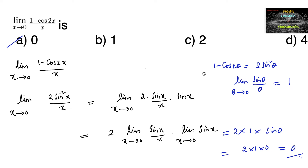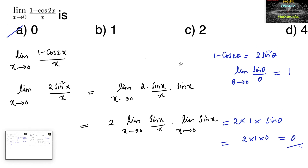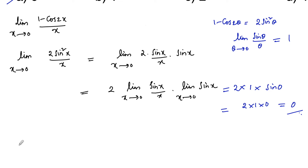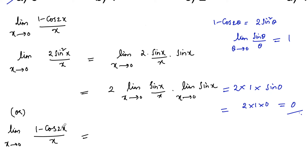We can also apply L'Hôpital's Rule for this question. Limit x tends to 0 of (1 - cos2x) / x. When x = 0: cos(2×0) = cos0 = 1, so 1 - 1 = 0 in the numerator and 0 in the denominator — it is 0/0 form. So we can apply L'Hôpital's Rule, differentiating numerator and denominator separately.